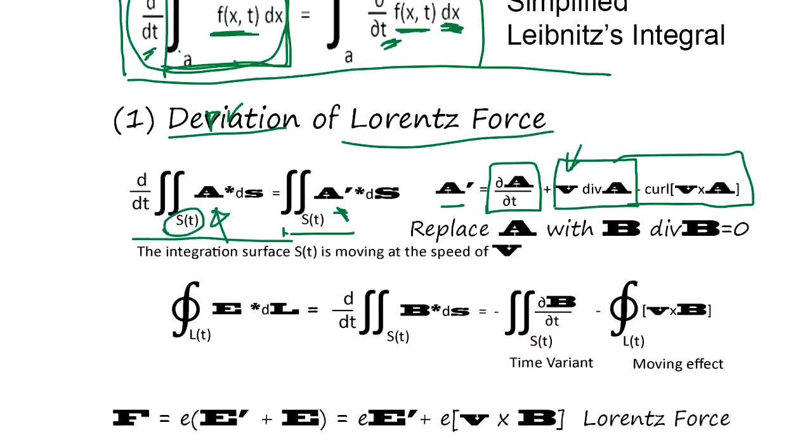So, and now, the divergent B, if we replace A with B, magnetic divergent is 0, we know that. So, what happens is, the integration surface ST is moving at a speed V.